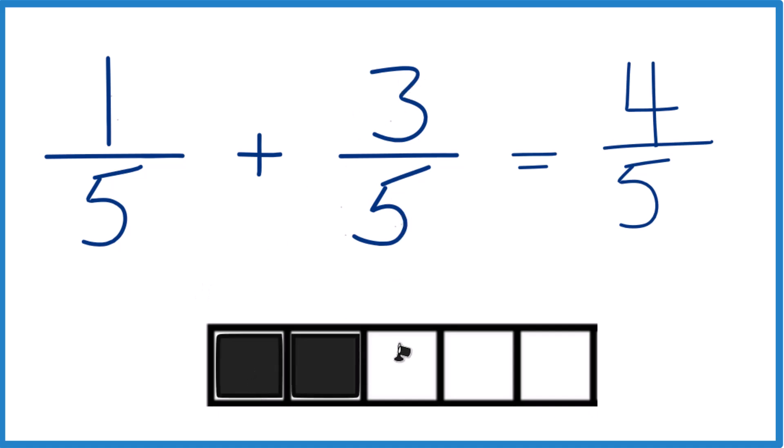So we're going to add one, two, three more. And overall, we have four blocks out of five, four-fifths. So that's why we keep the denominator the same - if these are the same, we'll have it the same in the answer, and we add the numerators.